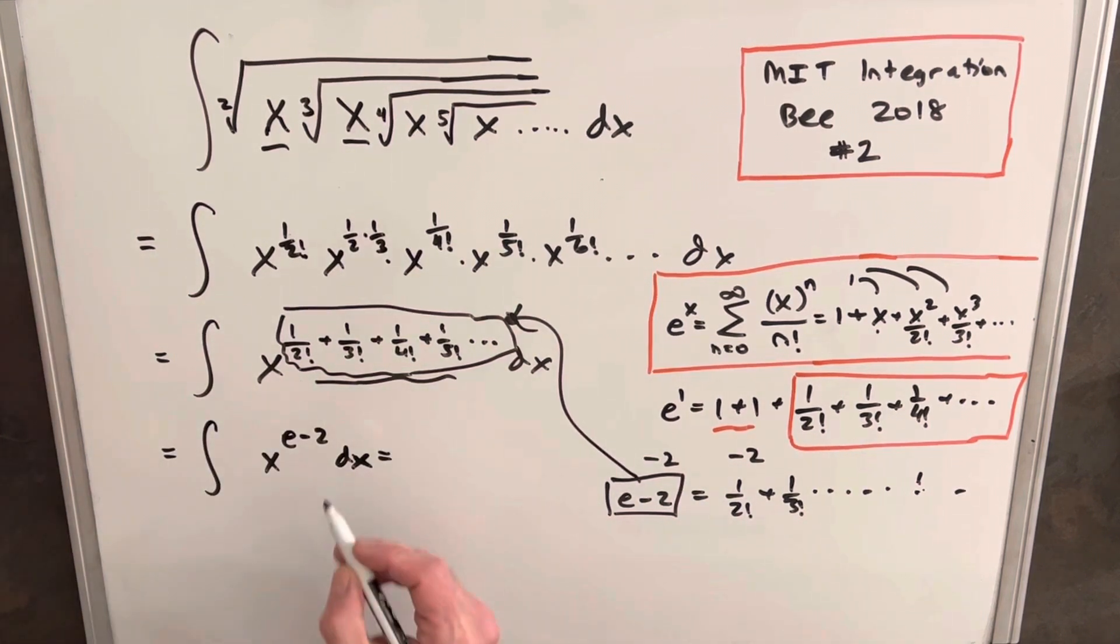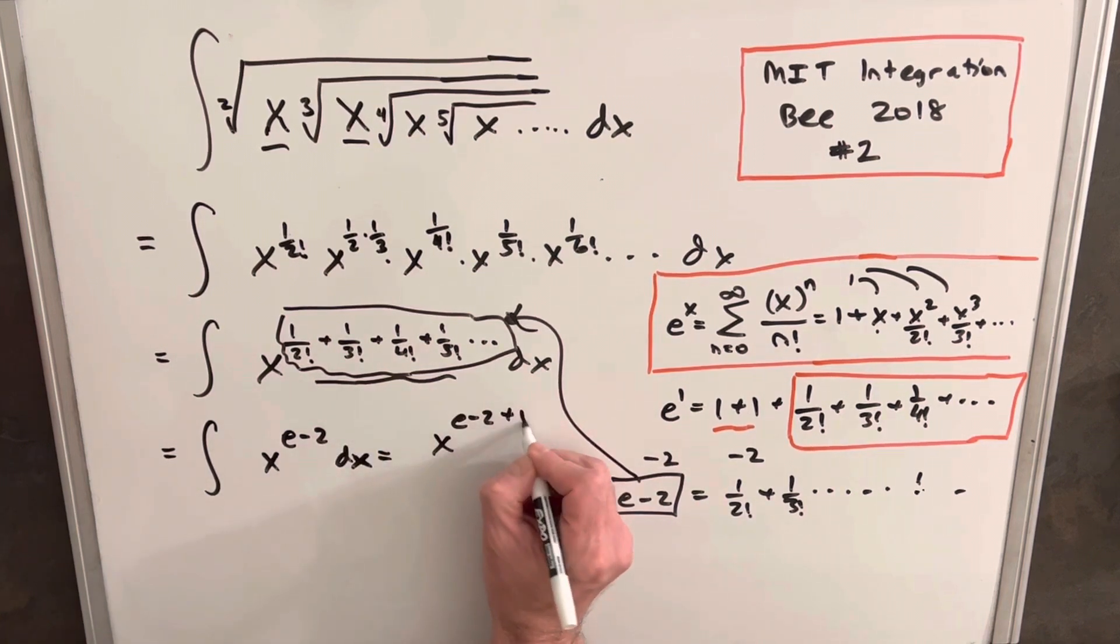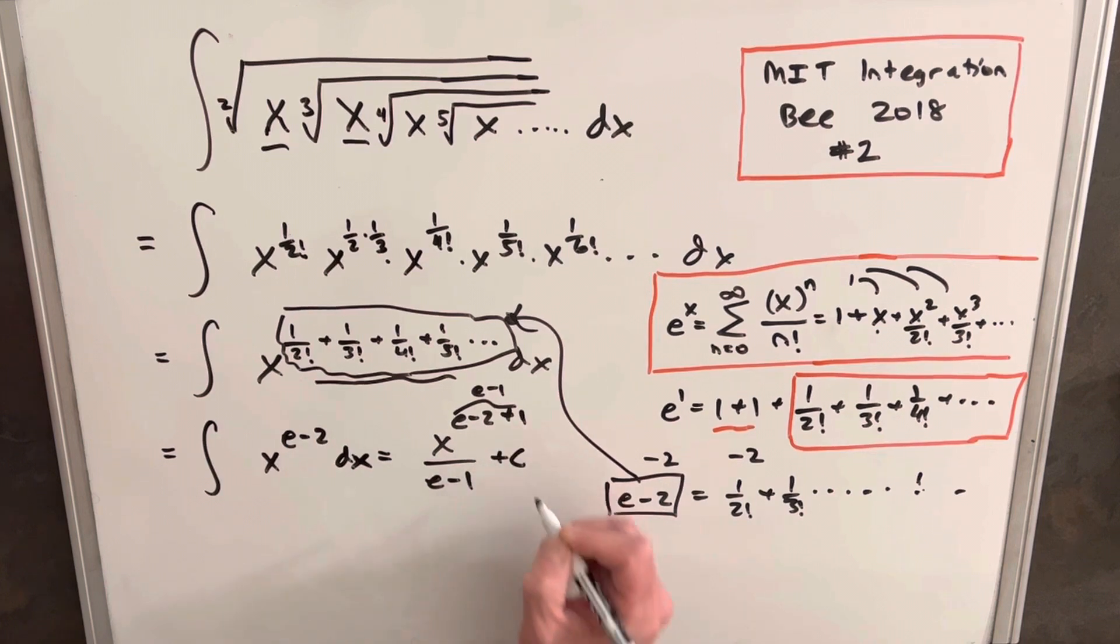Okay, so now to polish this off we can just use the power rule on this. So we're going to have x to the e minus 2, but we'll add a plus 1 to the exponent. This is just going to be e to the minus 1, and then we need to divide by e to the minus 1 plus c. And then that's just to clean it up so it looks nice. For our final answer it's x to the e minus 1 over e to the minus 1 plus c.